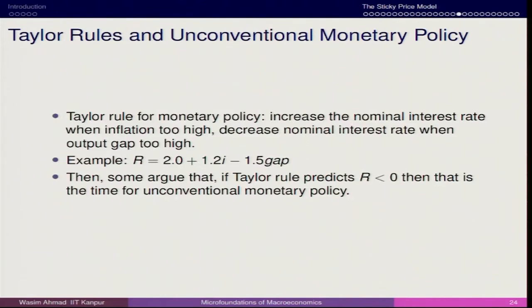If output is lower than potential, it signals a slowdown and unemployment will be higher. If the economy is producing above potential, unemployment will reduce. Regarding nominal interest rates: if inflation increases by 1 percent, nominal interest rate increases by 1.2 percent. If the output gap increases by 1 percent, the nominal interest rate has an inverse relationship — it decreases by 1.5 percent. If inflation is zero and there is no output gap, your nominal interest rate equals 2 percent, which is the natural rate of interest — the rate at which the economy achieves full employment equilibrium output.